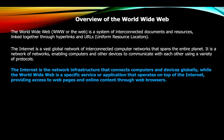The World Wide Web is often used interchangeably with the internet, but they are two different things. The internet is the network infrastructure that connects computers and devices globally, while the World Wide Web is a specific service or application that operates on top of the internet, providing access to web pages and online content through web browsers. The WWW is just one of several services provided by the internet.